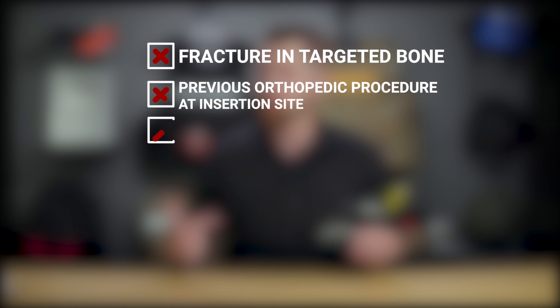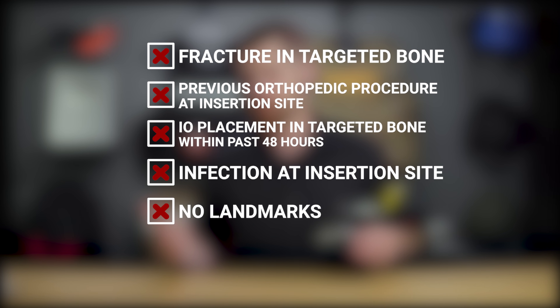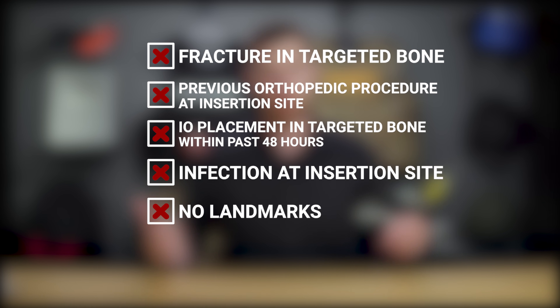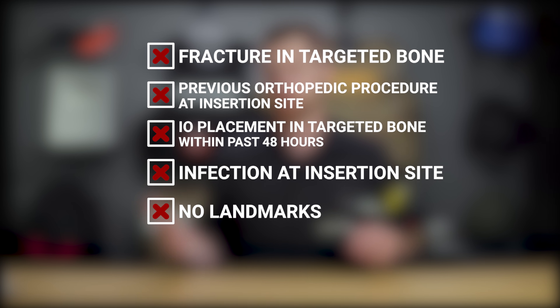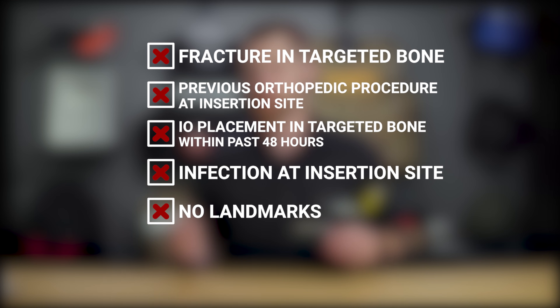The contraindications — reasons why we would not start an IO — are a fracture in the targeted bone, a previous orthopedic procedure at the site such as a joint replacement, another IO in the same site within 48 hours, or the absence of anatomic landmarks. That last one is a relative contraindication; often we can get a general idea and as long as we're not going into a joint, it can still be successful.